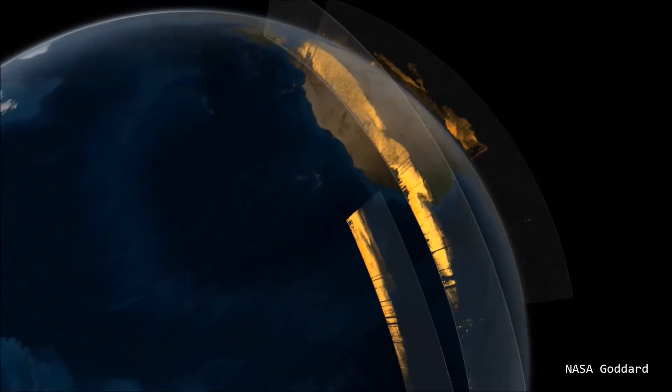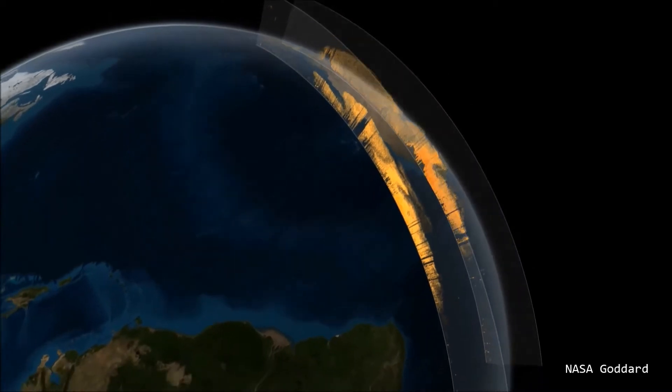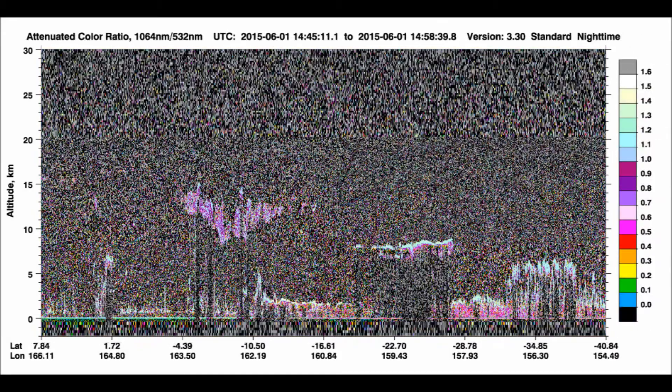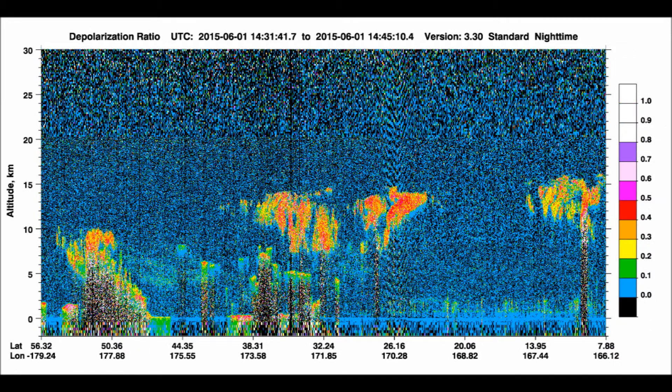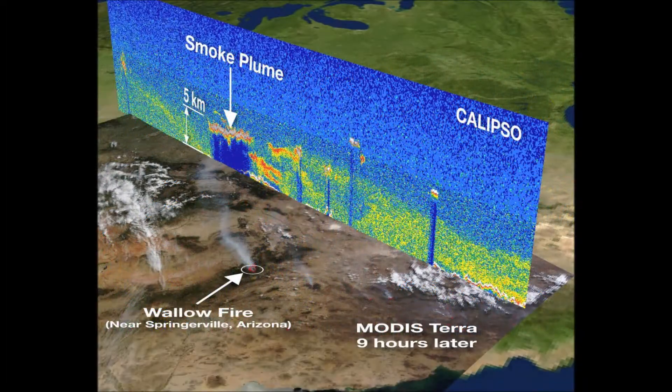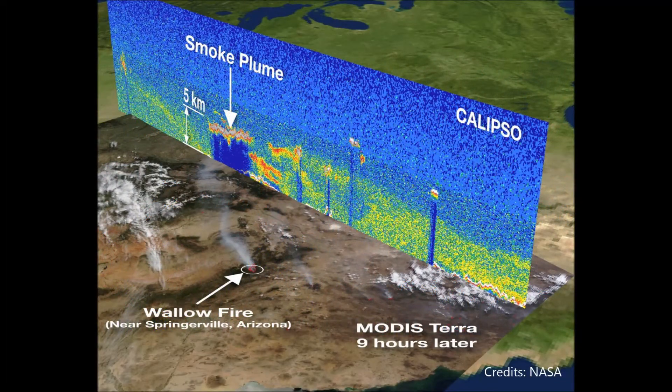Caliop provides high-resolution vertical profiles of aerosols and clouds in the Earth's atmosphere. Data collected by the Calypso Satellite can be visualized to show different views of aerosols and help researchers track the movement of airborne particles and identify properties of them, such as smoke or dust.